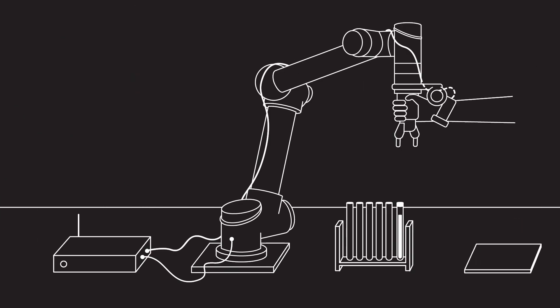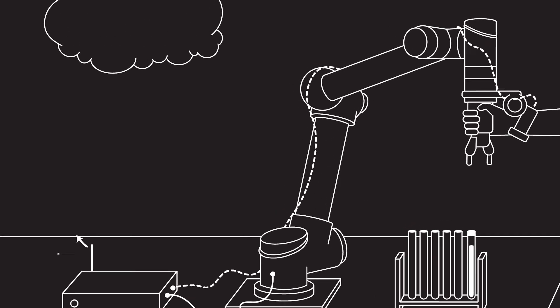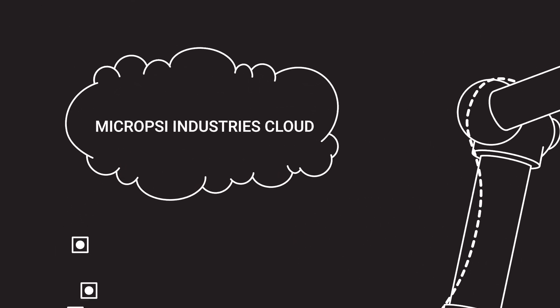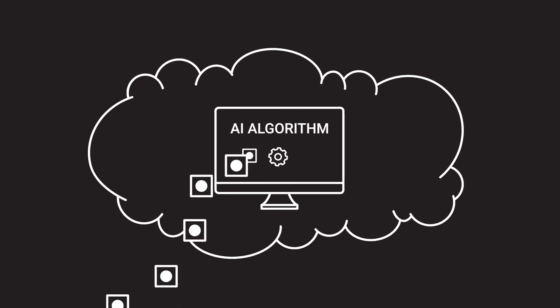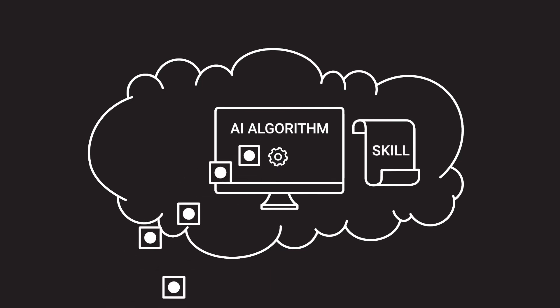The camera-recorded images are converted into data and transported via the Mirai controller to the Micropsy Industries secure computing cloud. There, we run the training data through an AI algorithm to create a skill that guides the robot where it performs the movement.